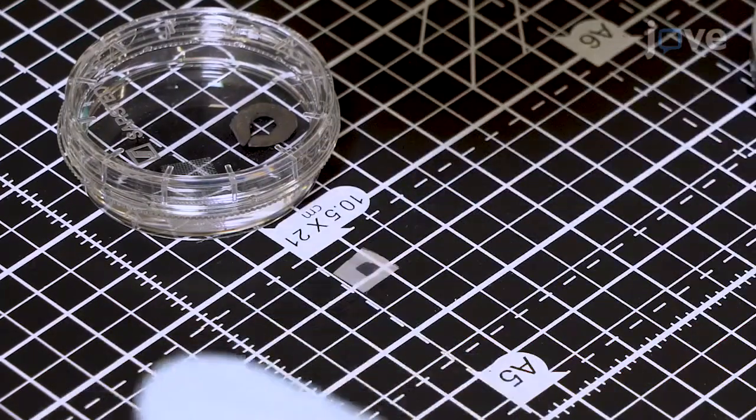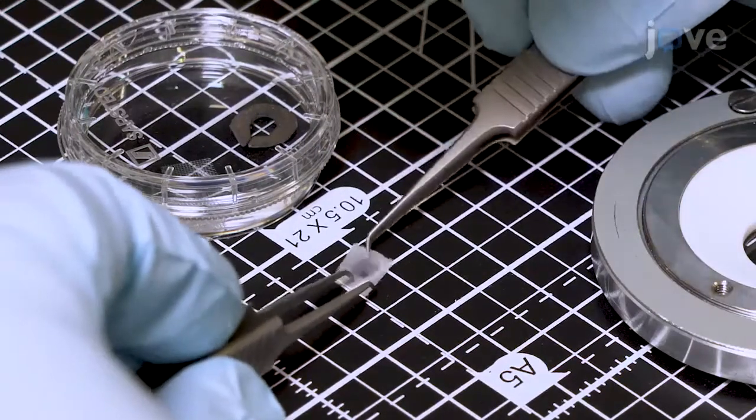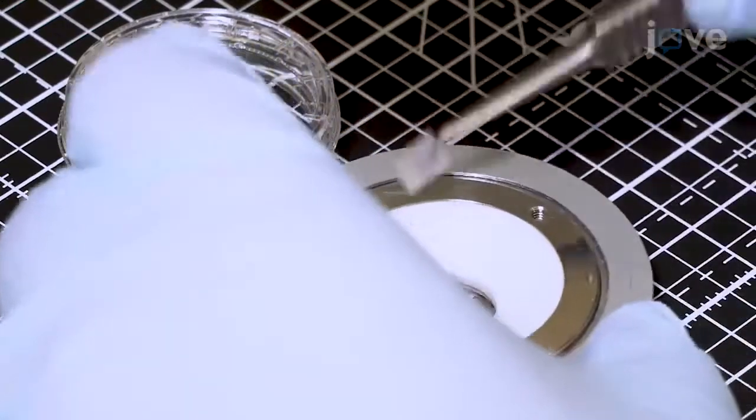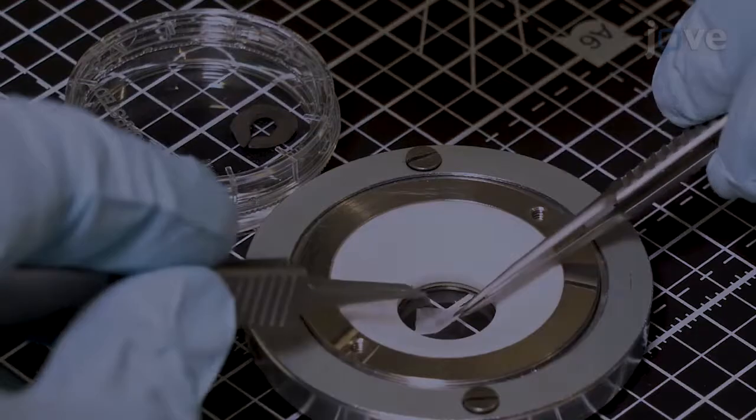Using watchmakers forceps, place the mesh upside down inside the imaging chamber of the inverted microscope so that the spacers face downward to sit directly on the chamber coverslip, trapping the islets between the spacers and the mesh in the middle of the coverslip.